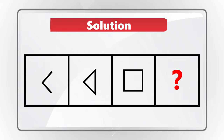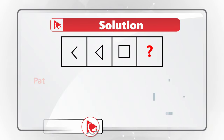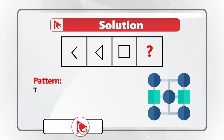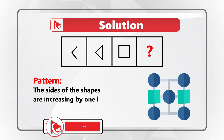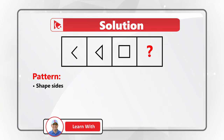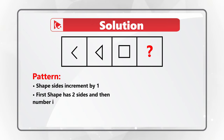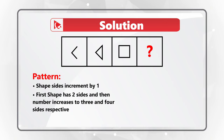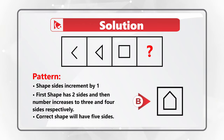The key to solving these types of challenges is to find the pattern. The pattern here is that the sides of the shape are increasing by one in each sequence. For example, if you look at the first shape, it has two sides, and the number continuously increases to three and four sides respectively. Which means that the missing shape should have five sides, and only shape B has five sides.